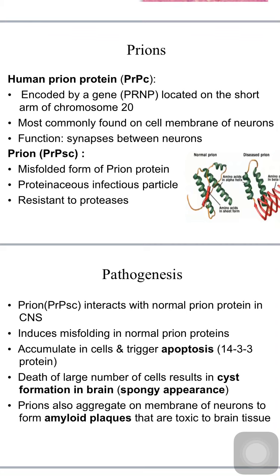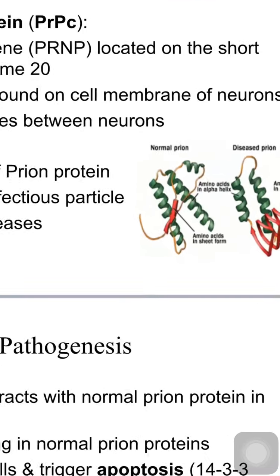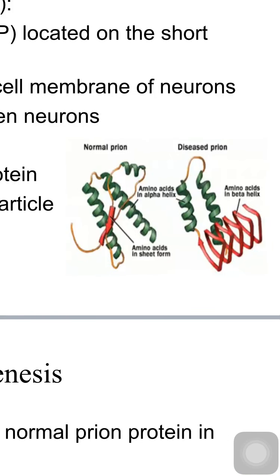Prions are proteinaceous in nature, do not have nucleic acid, and are resistant to proteases. The normal prion has more alpha helices and fewer beta-pleated sheets, whereas in the abnormally folded prion there are more beta-pleated sheets compared to alpha helices. This structural change makes the prion resistant to proteases.